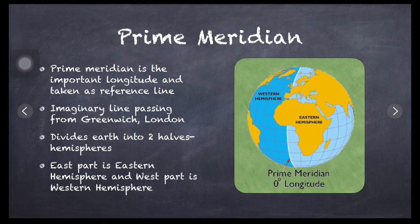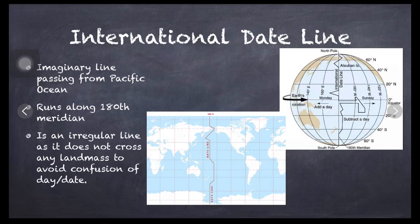Now, international date line. Please remember it is a date line, an imaginary line passing from Pacific Ocean. International date line is an imaginary line which passes from the Pacific Ocean.